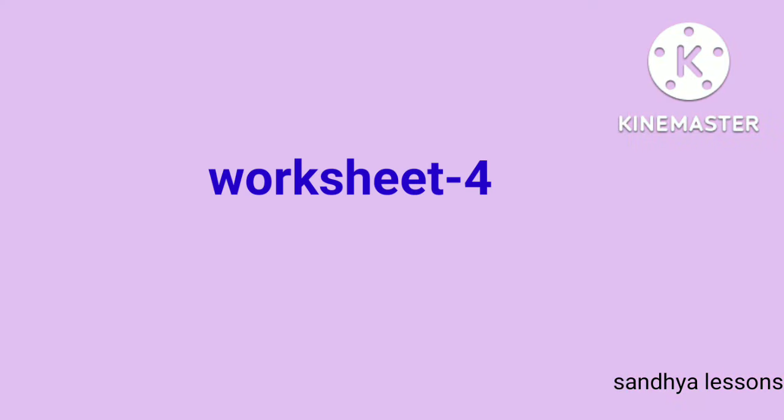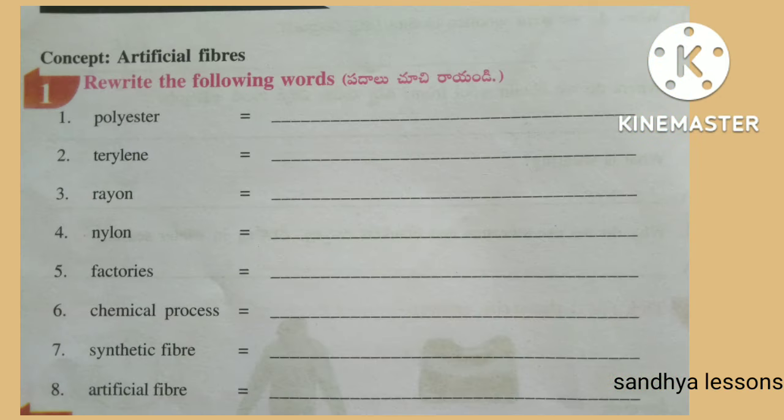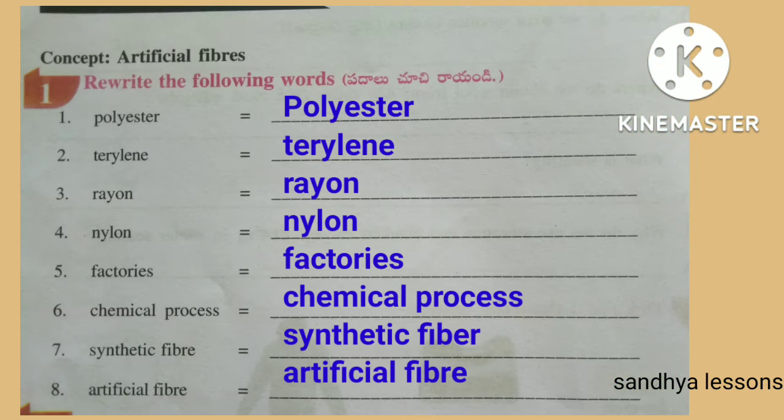Worksheet 4. First, rewrite the following words: Polyester, Terylene, Rayon, Nylon, Factories, Chemical Process, Synthetic Fiber, Artificial Fiber.